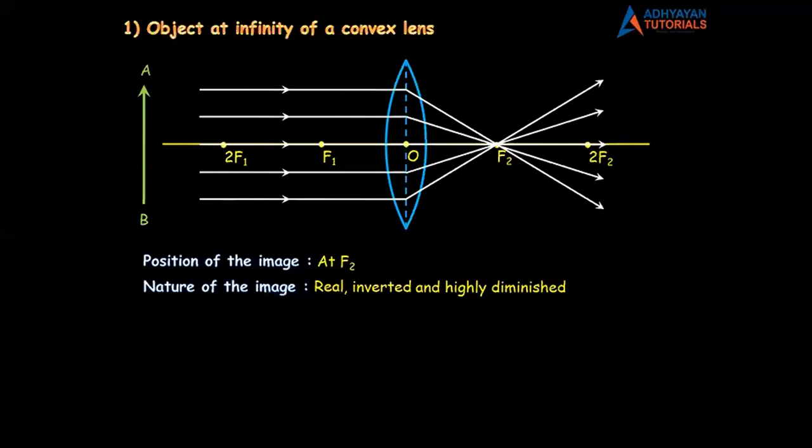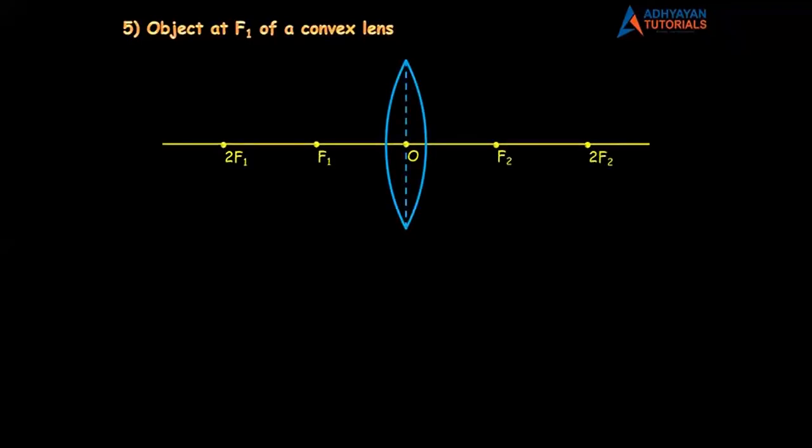Come on children, fast. All right, let's move on. Ray diagram number five. Ray diagram number five is a simple diagram to draw — object at F1 of a convex lens. The basic diagram is ready and I will note this.